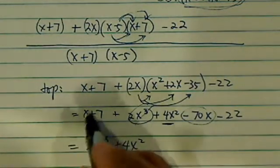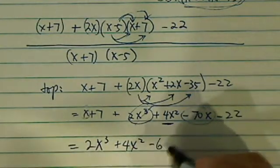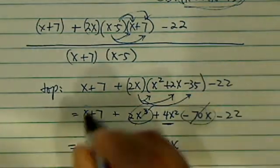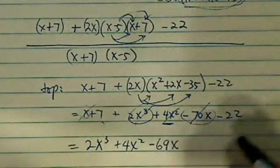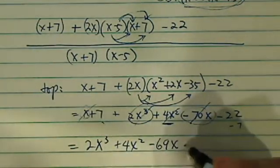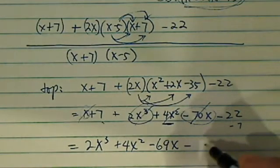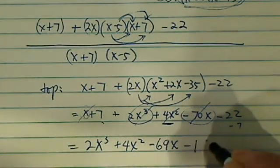And this one has minus 70x, and I have x here, so I have minus 69x. Okay, this is taken care of. And I have plus 7 and minus 22 there, so I have minus 15.